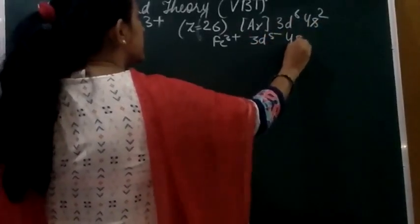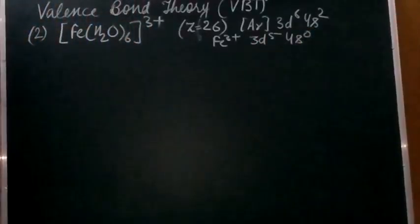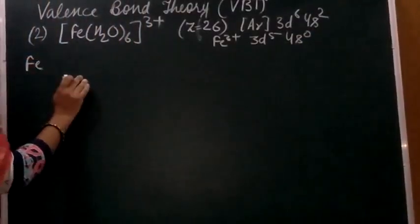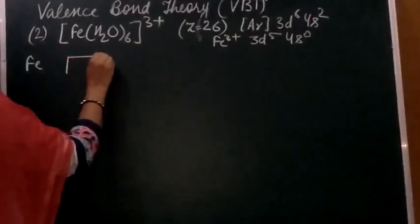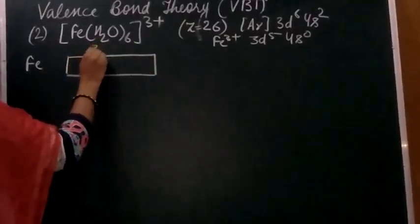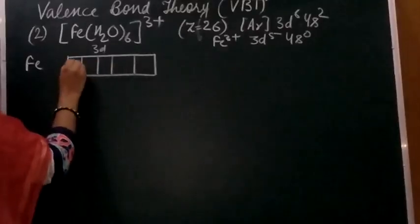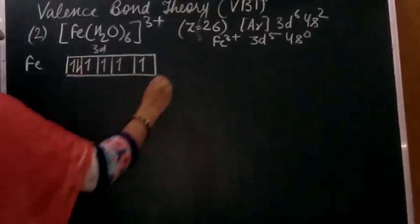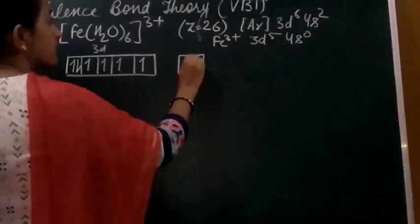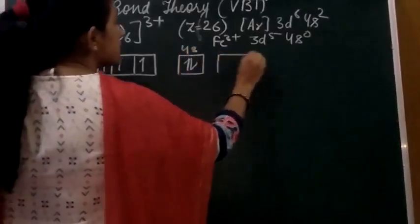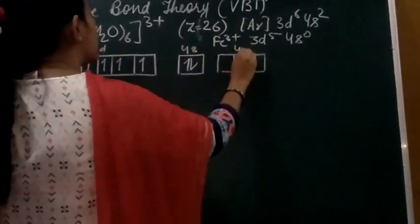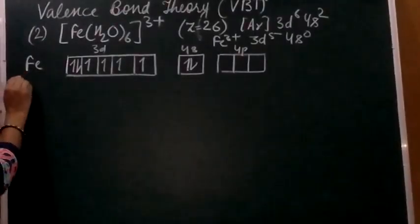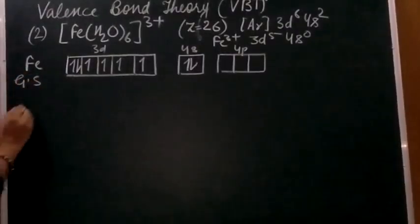The outermost configuration of Fe³⁺ is 3d⁵ and 4s⁰. We will first write down the iron configuration in the ground state: 3d⁵ 4s⁰. The 4s² electrons are removed first when forming Fe³⁺.